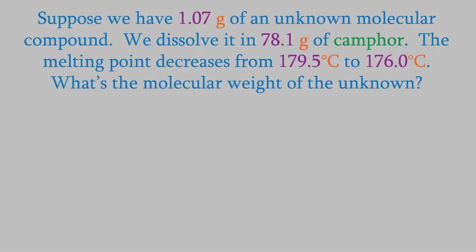Suppose we have 1.07 grams of an unknown molecular compound, and we dissolve it in 78.1 grams of camphor. When we do that, it makes the melting point of the camphor decrease from 179.5 degrees C to 176.0 degrees. Based on that, what's the molecular weight of our unknown? The first thing we need to do is decide which colligative property is being used here. The solvent is camphor, and the solute is the unknown. When we added the unknown, the melting point of the camphor went down. If you think about it, you'll probably realize that the melting point is the same thing as the freezing point. So the freezing point is what went down.